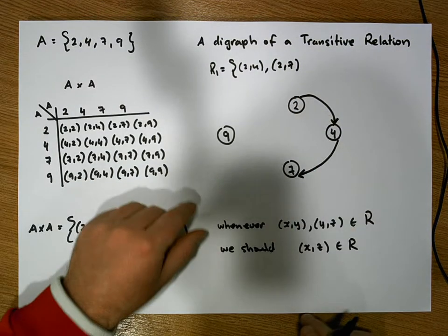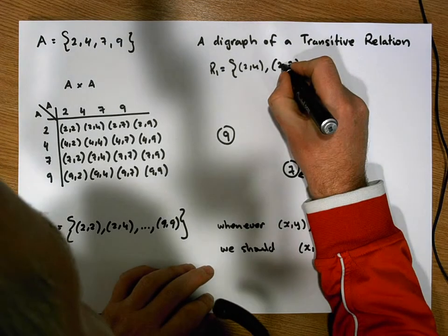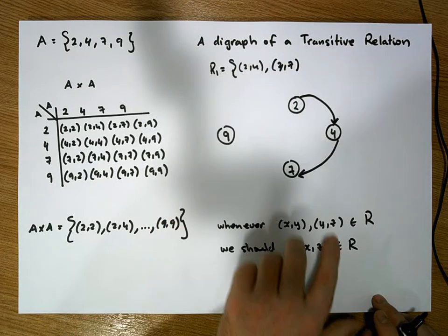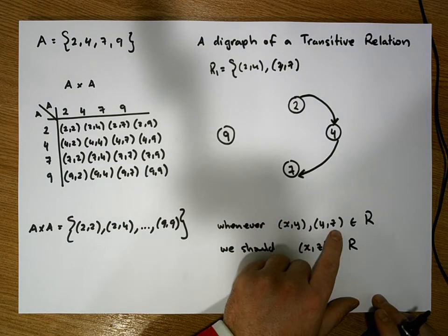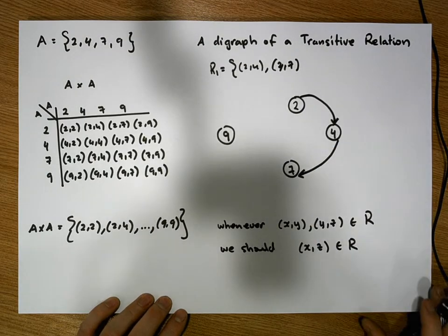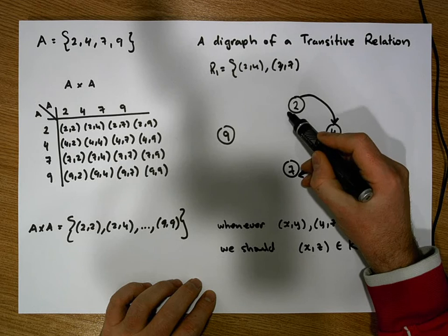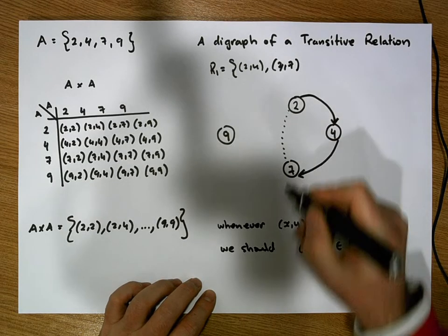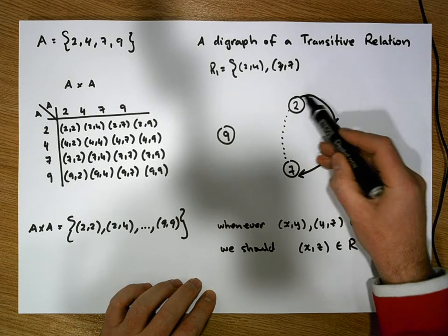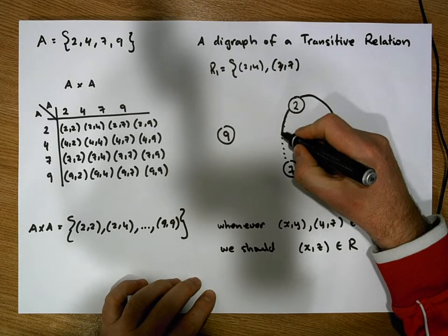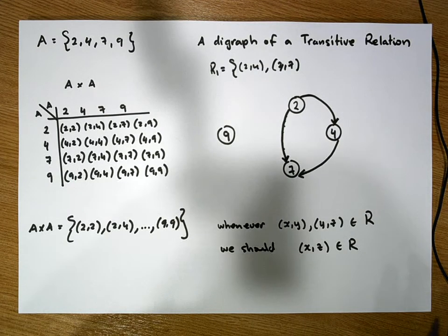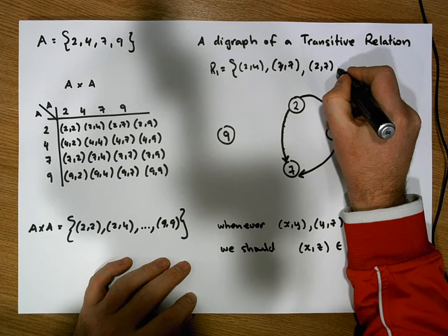Now if you think about it, we have (2, 4) and (4, 7) in the relation. The x value in the first pair is 2, the y value is 4, and the z value is 7. So 2 is taken to 4, and 4 is taken to 7. If this relation were transitive, we should be able to go directly from 2 to 7. So we can make this relation transitive by adding the edge from 2 to 7. This relation now contains the ordered pair (2, 7), and it is transitive.